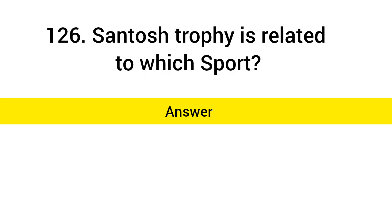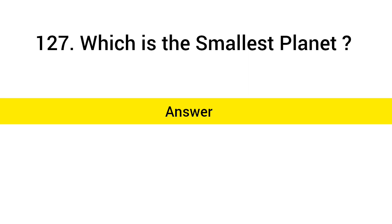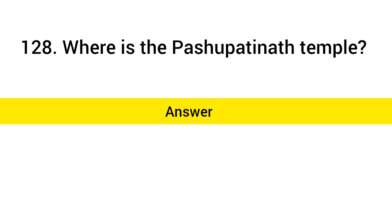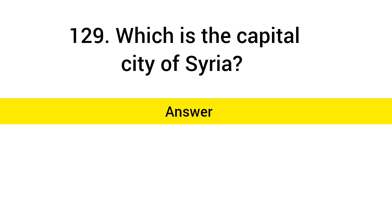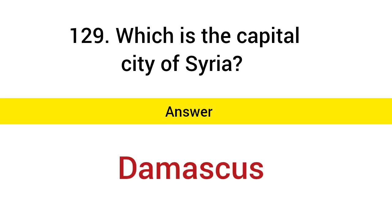Santosh Trophy is related to which sport? Answer: Football. Which is the smallest planet? Answer: Mercury. Which is the capital city of Syria? Answer: Damascus.